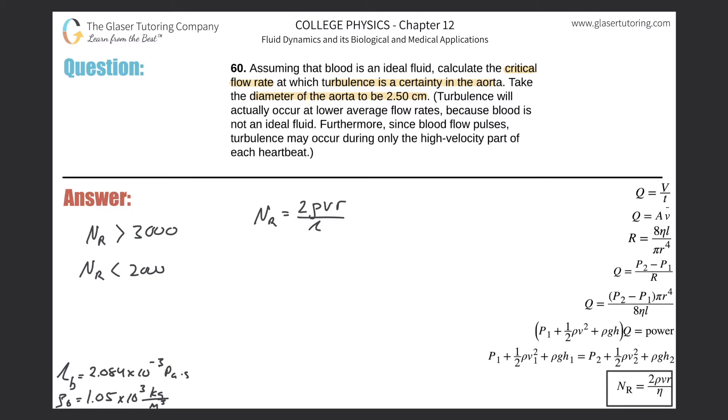Do I know everything? We're talking about blood at body temperature, so the viscosity we do know—that's looked up at 37 degrees Celsius. The density of blood is about 1.05 times 10³ kg/m³.